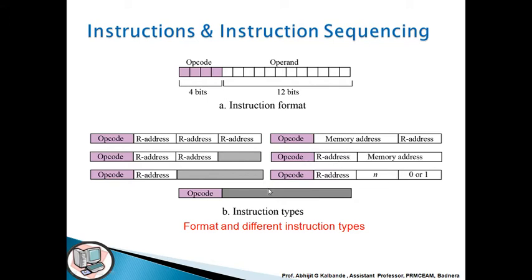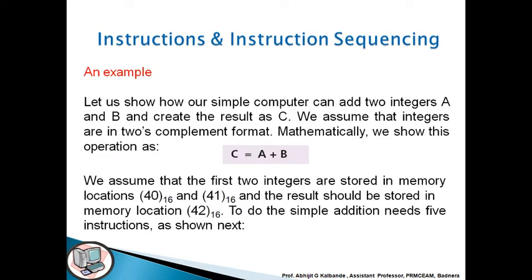Here the opcode memory address with the certain instruction, here opcode relative address and memory address is given. Another is the opcode with relative address with numbers and zeros and ones set. So these are the different formats of the different instruction types.